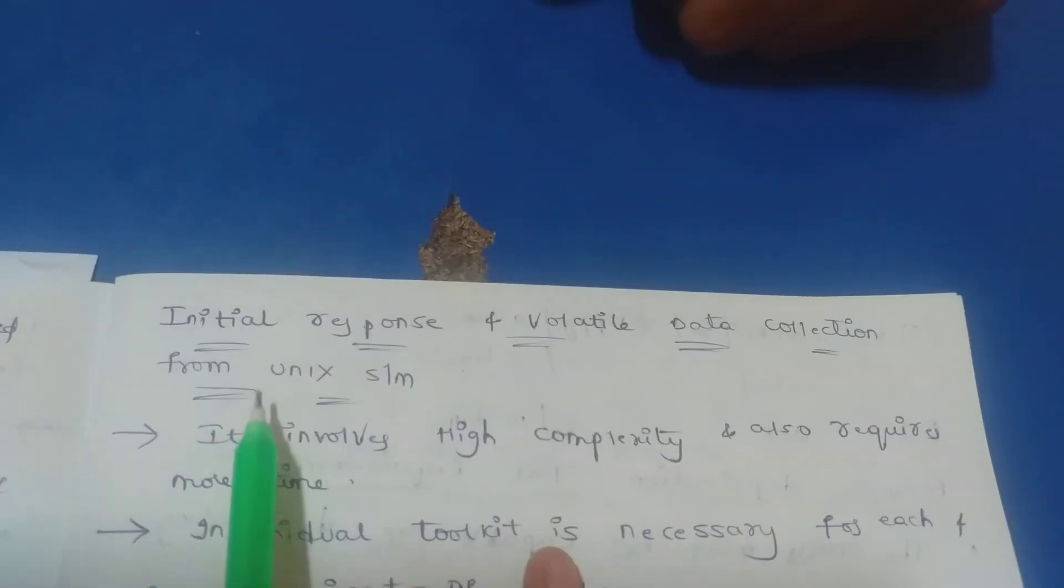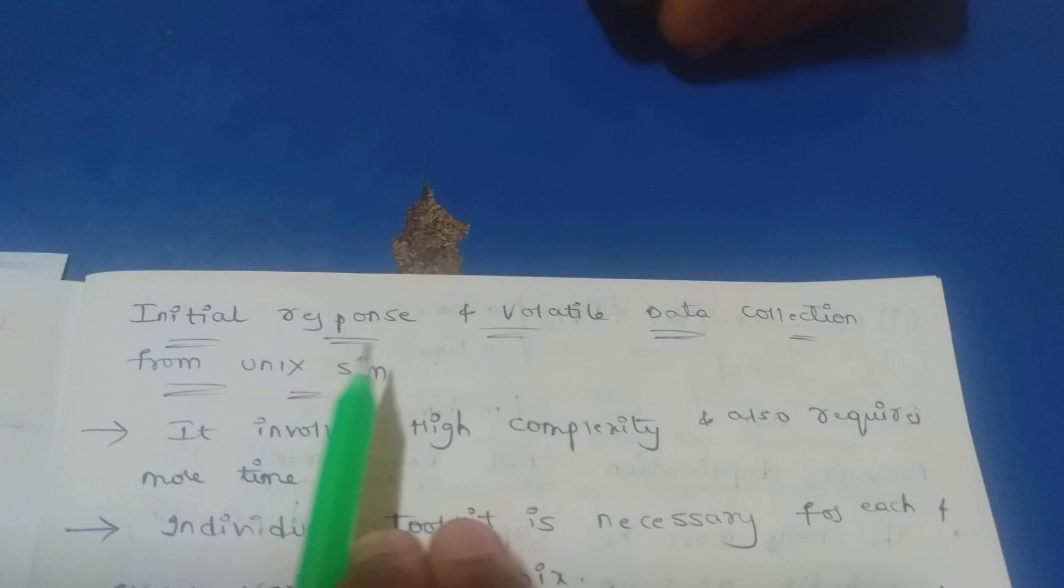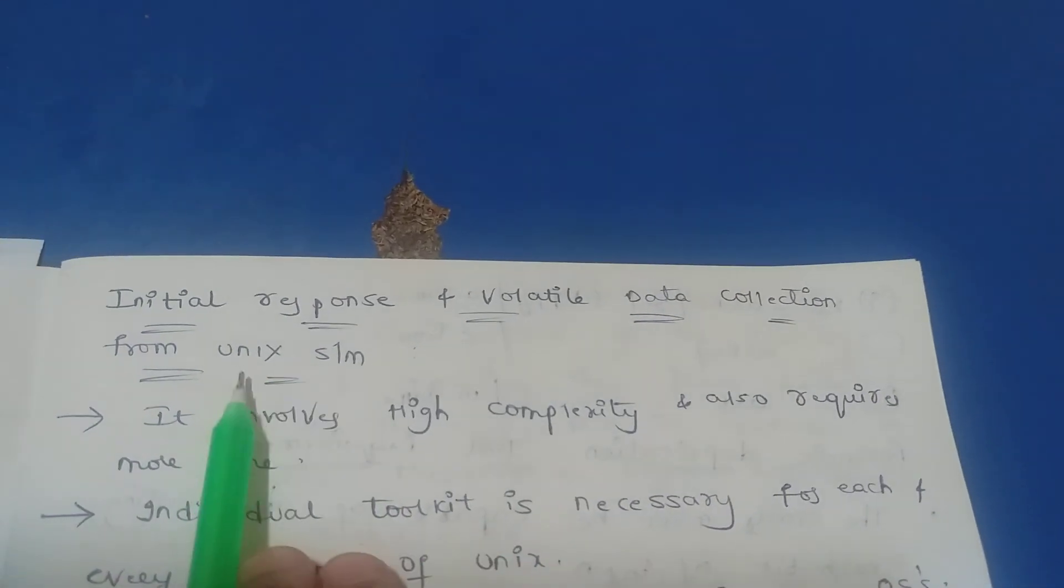Our next topic is initial response and volatile data collection from UNIX system. Previous topic was Windows system and next topic is UNIX system.